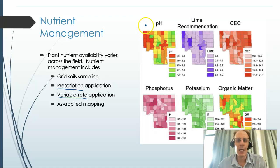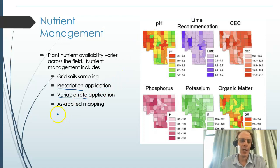As the implement moves through the field, it will apply more or less lime or fertilizer based on the map. When we complete our application, we produce another map called the as-applied map, which records how much fertilizer, chemical, or lime was actually applied and in what location.